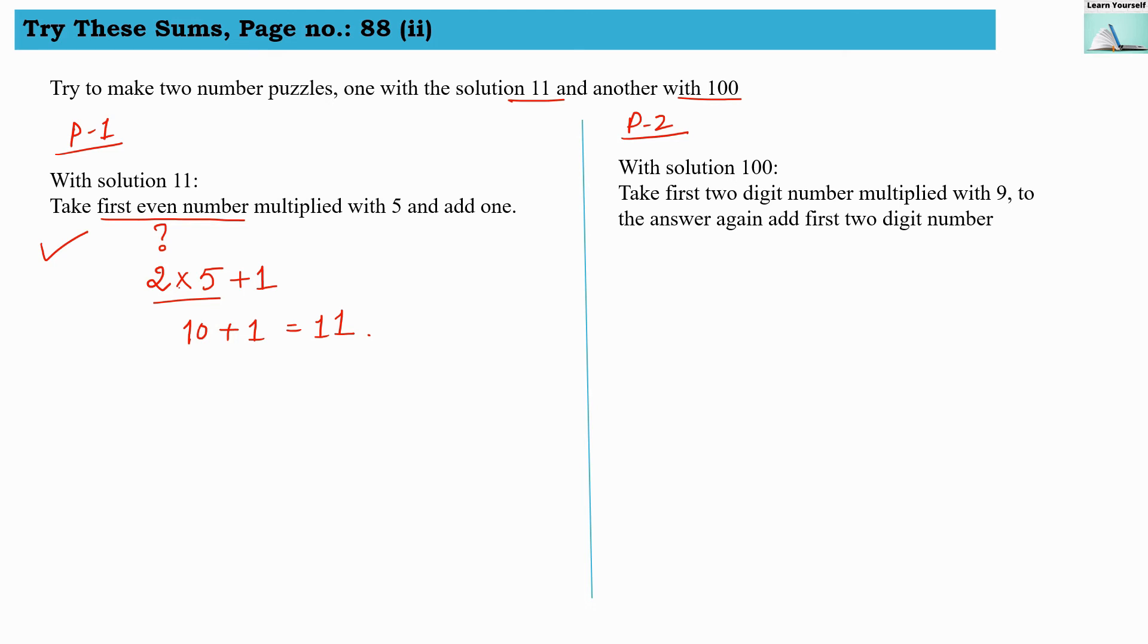Now let us check puzzle number 2 with solution 100. It says take first two-digit number. First two-digit number is 10, multiplied with 9. So I am going to multiply it with 9 to the answer. Let us find out the answer, that is 90. Now this is the answer. To the answer again add first two-digit number, so again we add 10. This will give us 100 as the solution. Like this, with little complexity, you can make different kinds of puzzles.